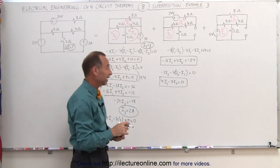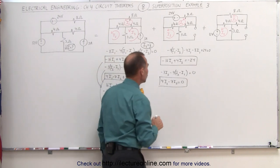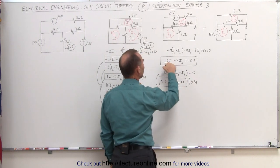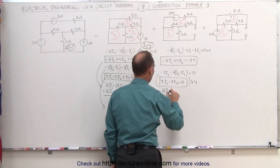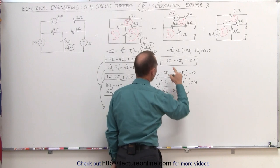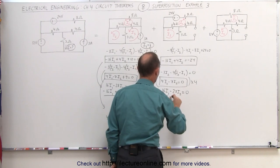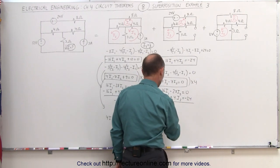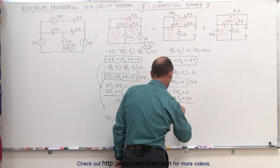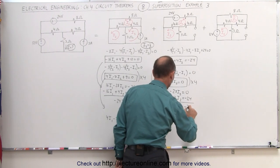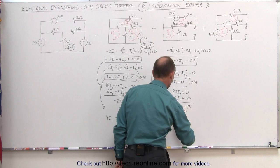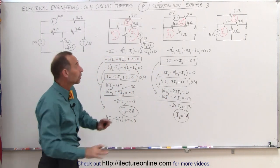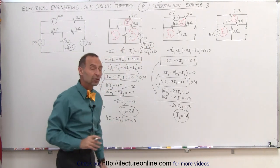My second equation using mesh 2: going around, I have minus 3I2 — no I3 to worry about — coming across, minus 4I2 minus I1 equals zero. Simplifying: 4I1 minus 7I2 equals zero. Now I multiply this equation by 4 to get 16I1 minus 28I2 equals zero, add it to minus 16I1 plus 4I2 equals minus 24. The I1s drop out and I end up with minus 24I2 equals minus 24, therefore I2 equals 1 amp. In the first circuit I2 equals 2 amps; in this circuit I2 equals 1 amp — not a contradiction, as these are two very different circuits.